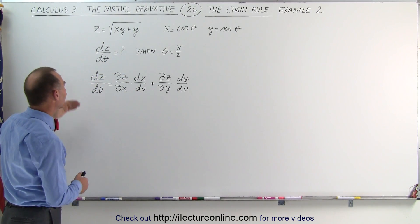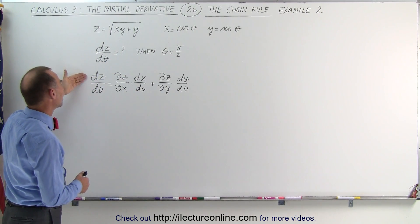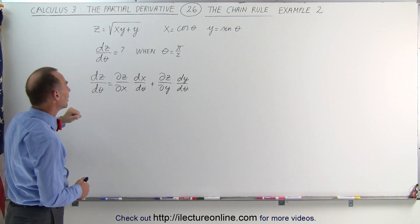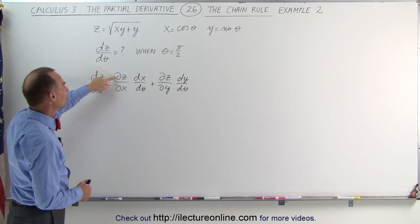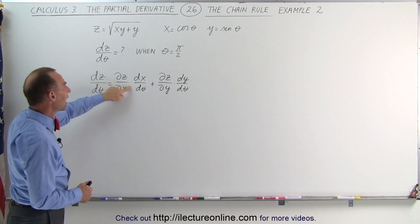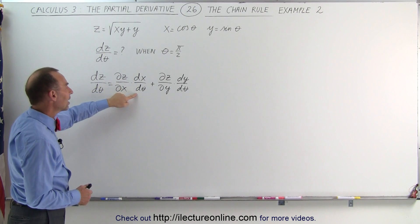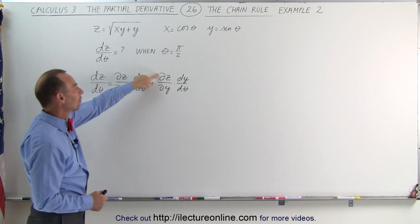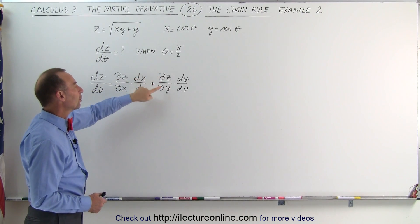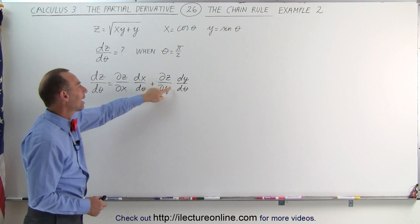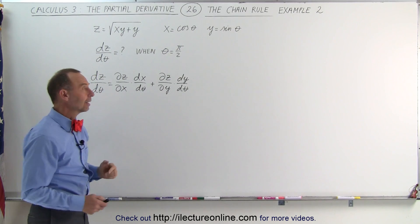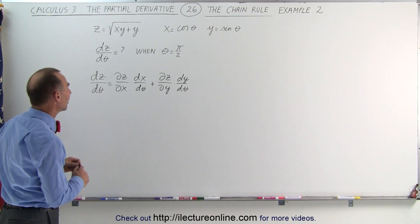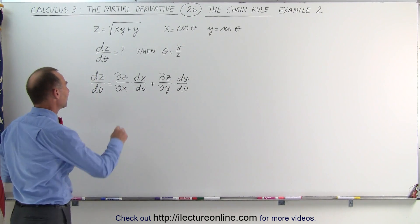What we know is that the partial derivative of z with respect to theta can be written as the partial derivative of z with respect to x times dx/dθ, plus the partial derivative of z with respect to y times dy/dθ. Let's go ahead and find all those derivatives and see what we get.